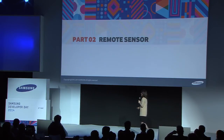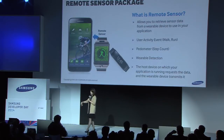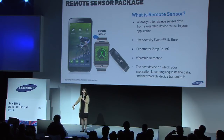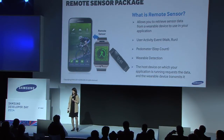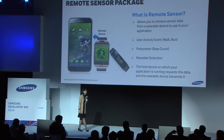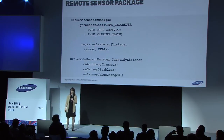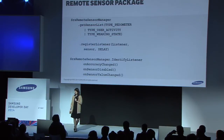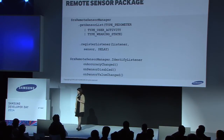Remote sensor is the second new package. It basically lets you grab the sensor data that's on your wearable. It works with both the Gear 2 and the Gear Fit. There are three events that it's tracking: user activity — whether the user is walking or running; pedometer — it tracks or gathers the step count; and wearable detection — to tell where the device is physically located. The class you would use is SRS remote sensor manager. You call get sensor list to get the specific sensor type you need — type pedometer, user activity, or type wearable state.